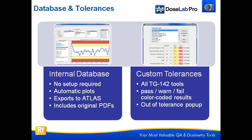One of the most important parts is that all of these tests have built-in database support and tolerances. The internal database is very nice because it doesn't require any setup — you simply say save this result, and it creates a new database if it has to, then shows you the results and gives you very quick and easy access to trending. It also exports to Atlas. If any clinic has Atlas, they can even take the last two years of results from DoseLab's database and export all those into Atlas. The DoseLab database also includes access to the original PDFs, so it's very convenient to save both your numerical results for trending and your actual visual results.